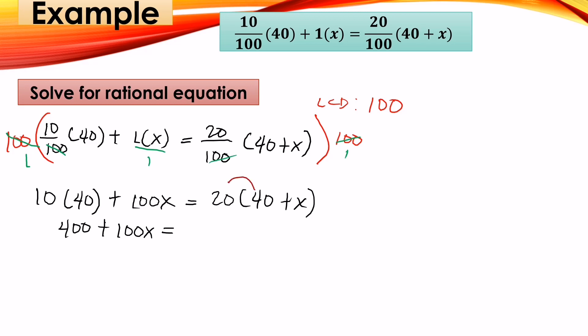Then simplify. 10 times 40 is 400 plus 100x equals 20 times 40 which is 800, and then 20 times x is positive 20x. Then combine.